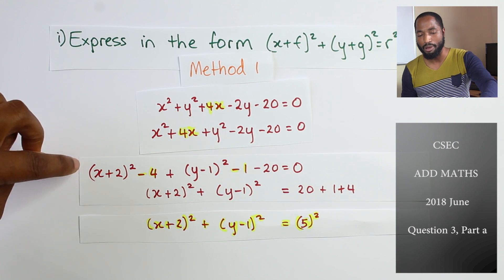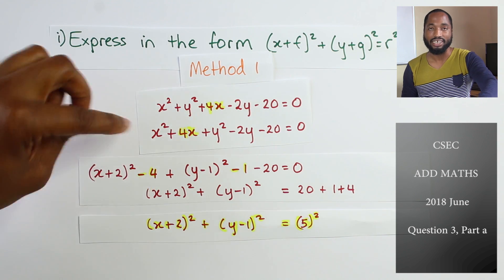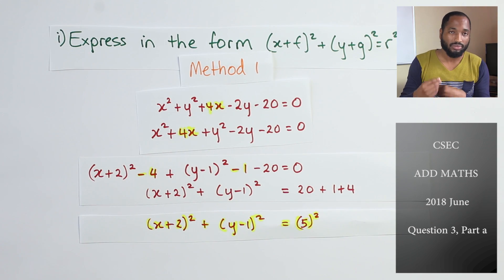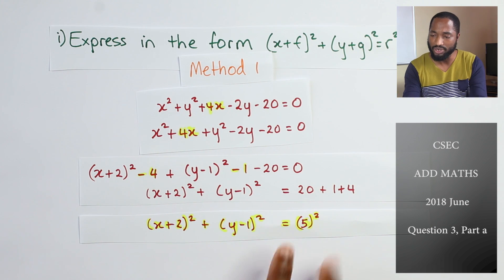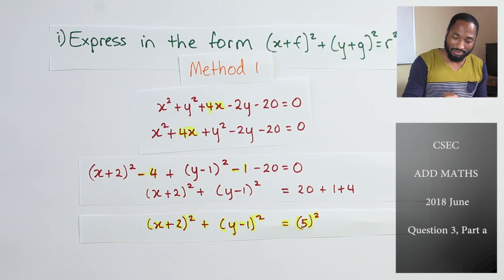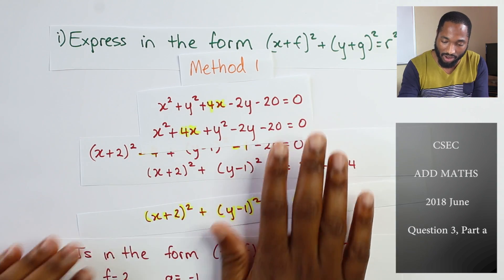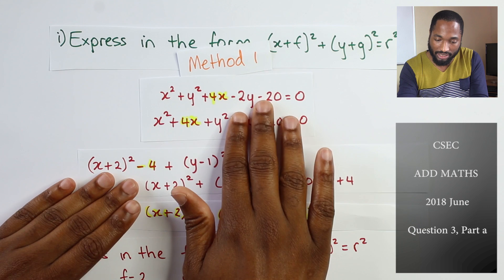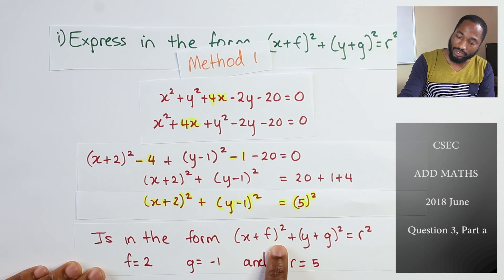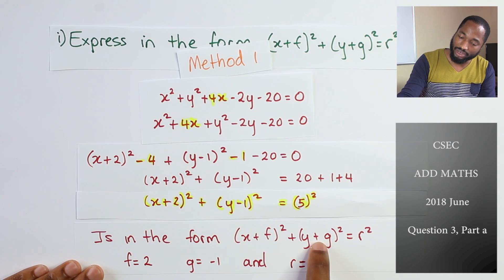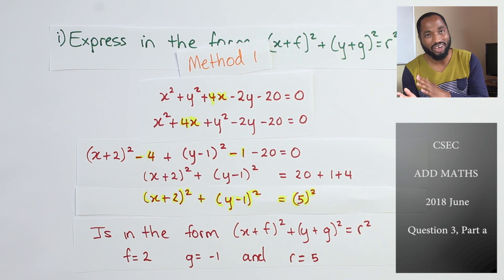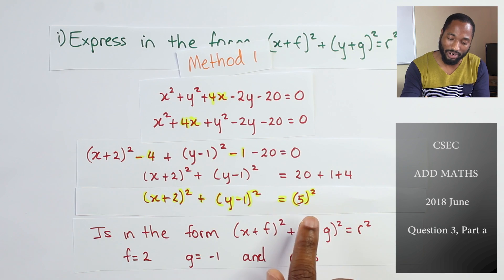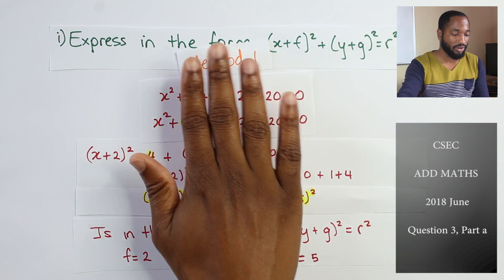To maximize marks, remember to state what this form represents — state what f is, what g is, and what r is. Don't just leave the expression; state a little something. So the real trick is to remember how to get from the expanded form to the standard completed-square form. Now let's look at method two.